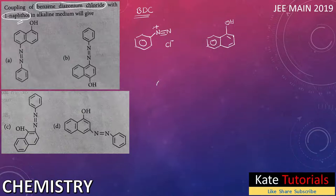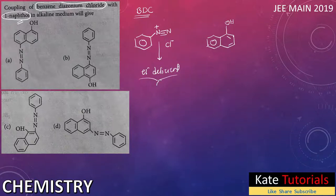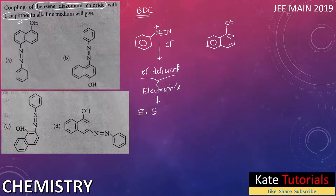The nitrogen having a positive charge is electron deficient — meaning electrons are less, so it acts as an electrophile. It will react with a nucleophile like the benzene ring, because the benzene ring is rich in electrons. So these will undergo electrophilic substitution reaction (ESR).